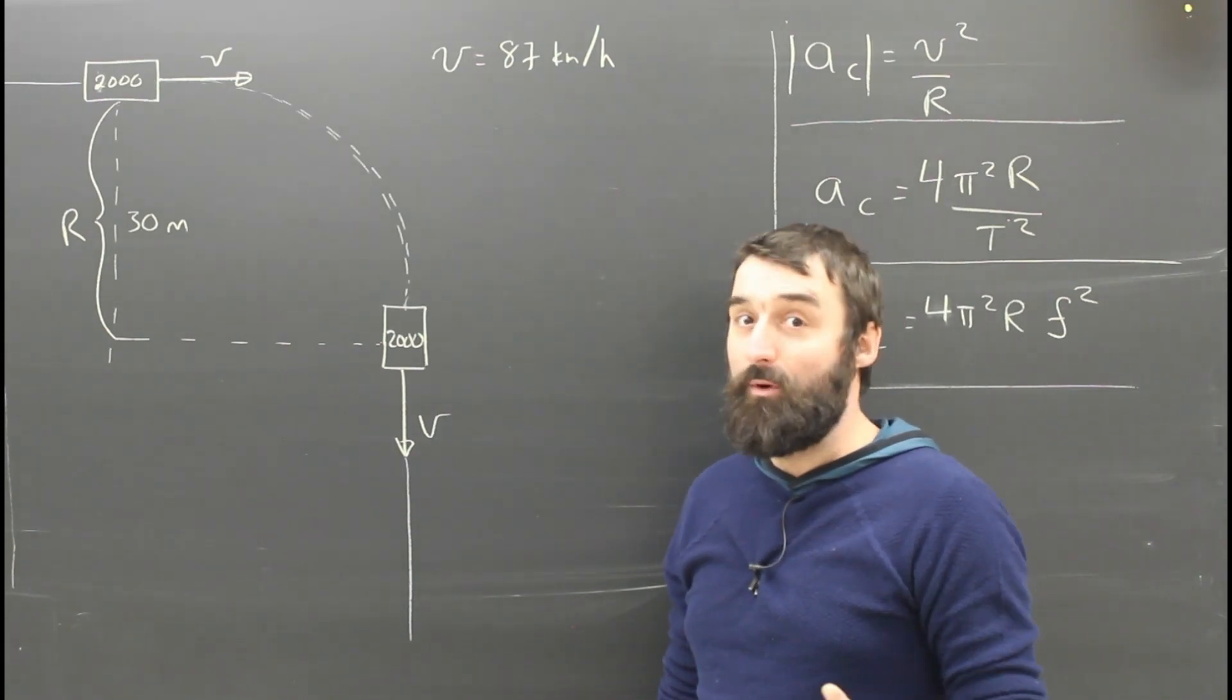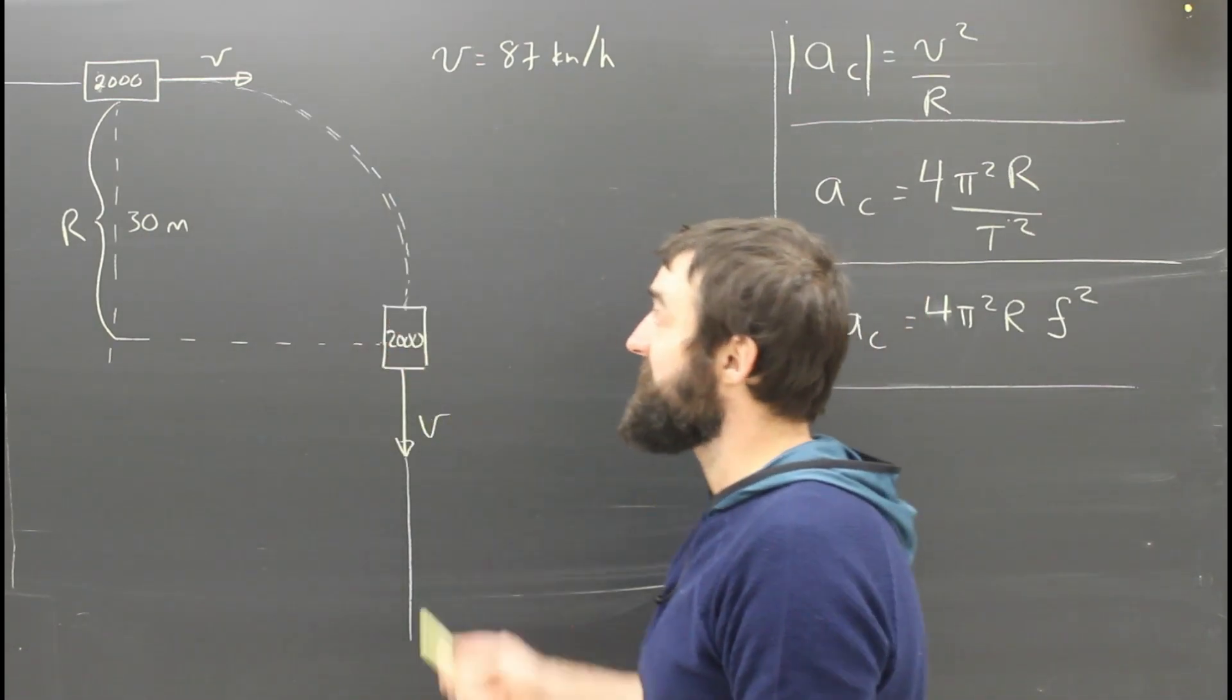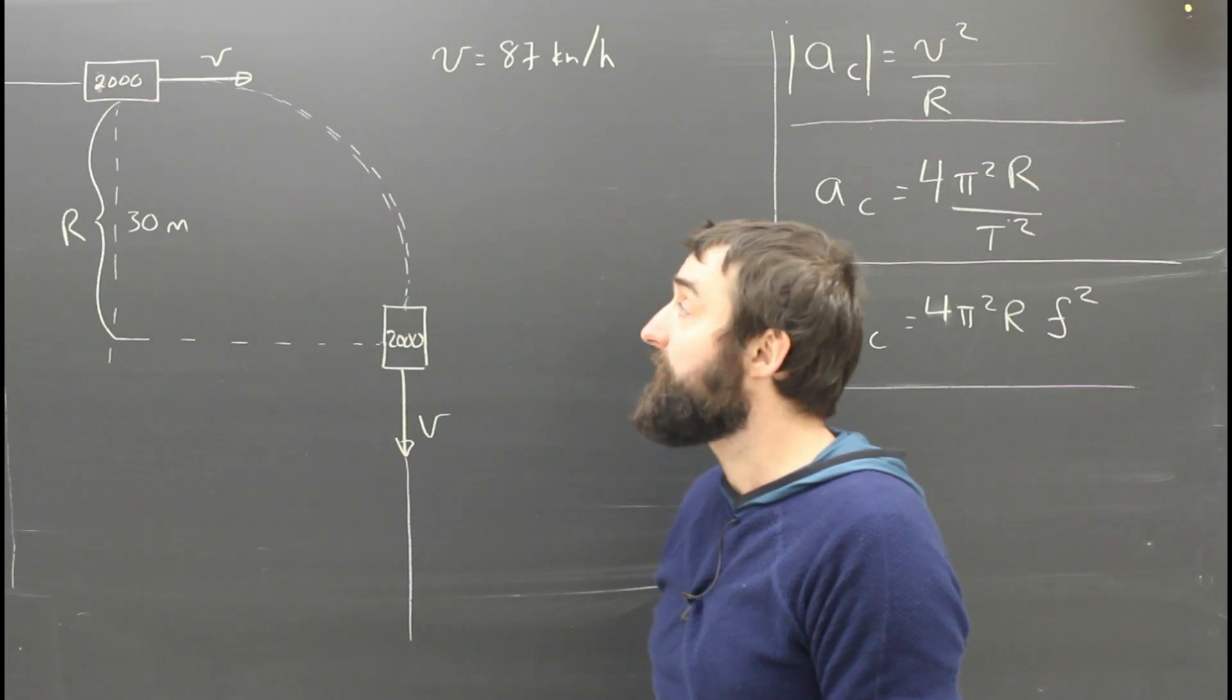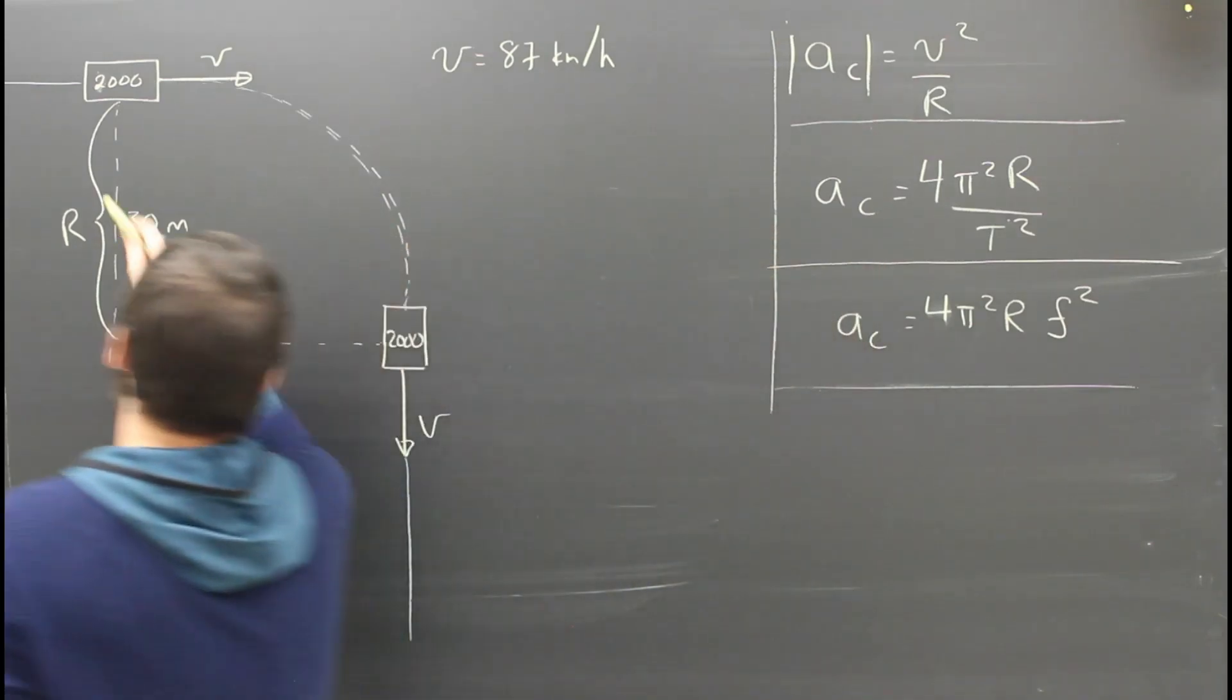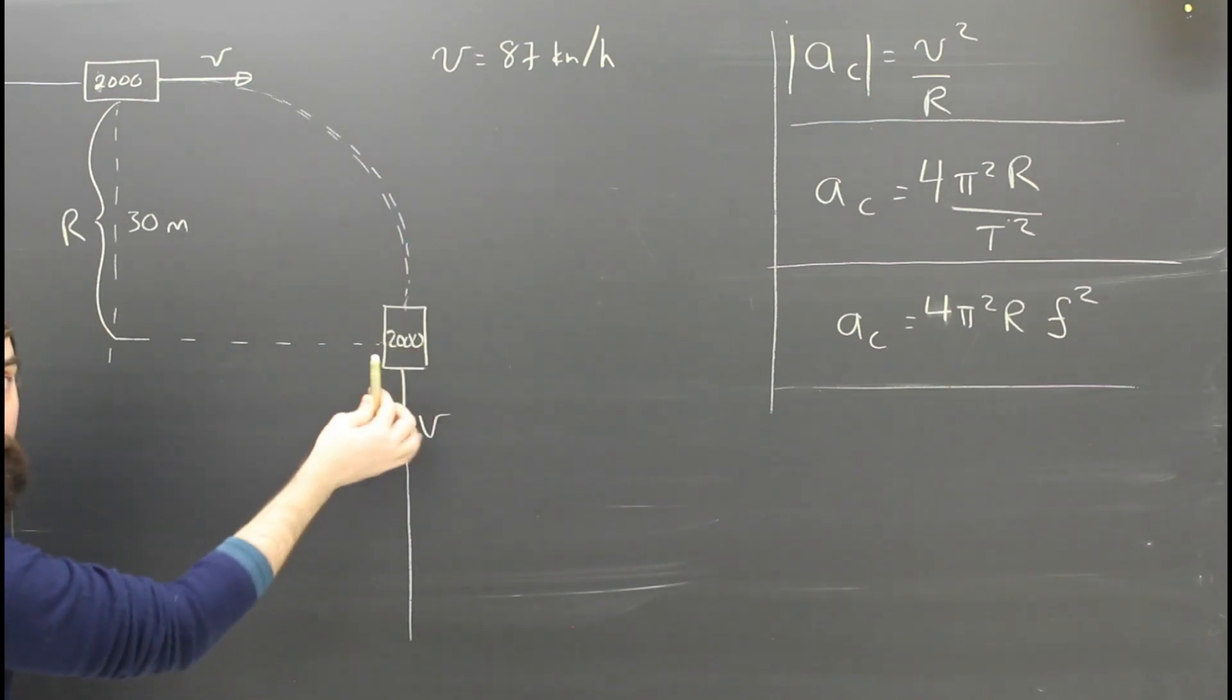It didn't change speed. It wasn't speeding up or slowing down, but it was accelerating because its velocity changed from east to south. You can see also that it's not going in a complete circle, but it's going in a curve, which is part of a circle.